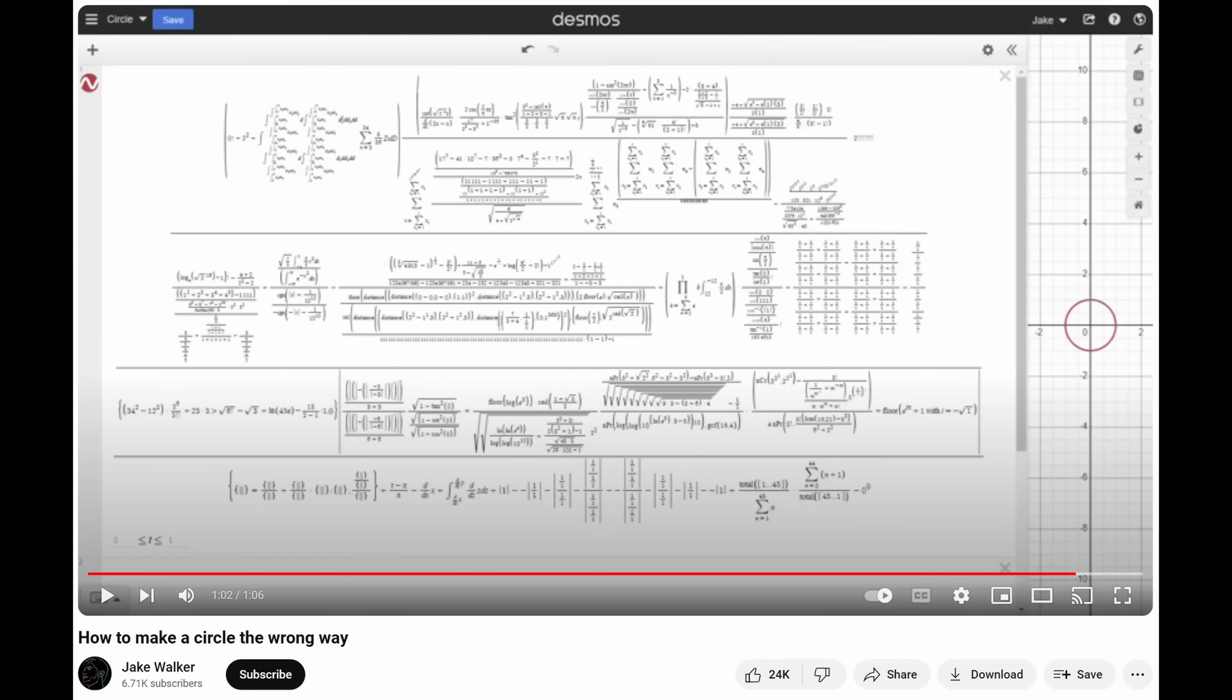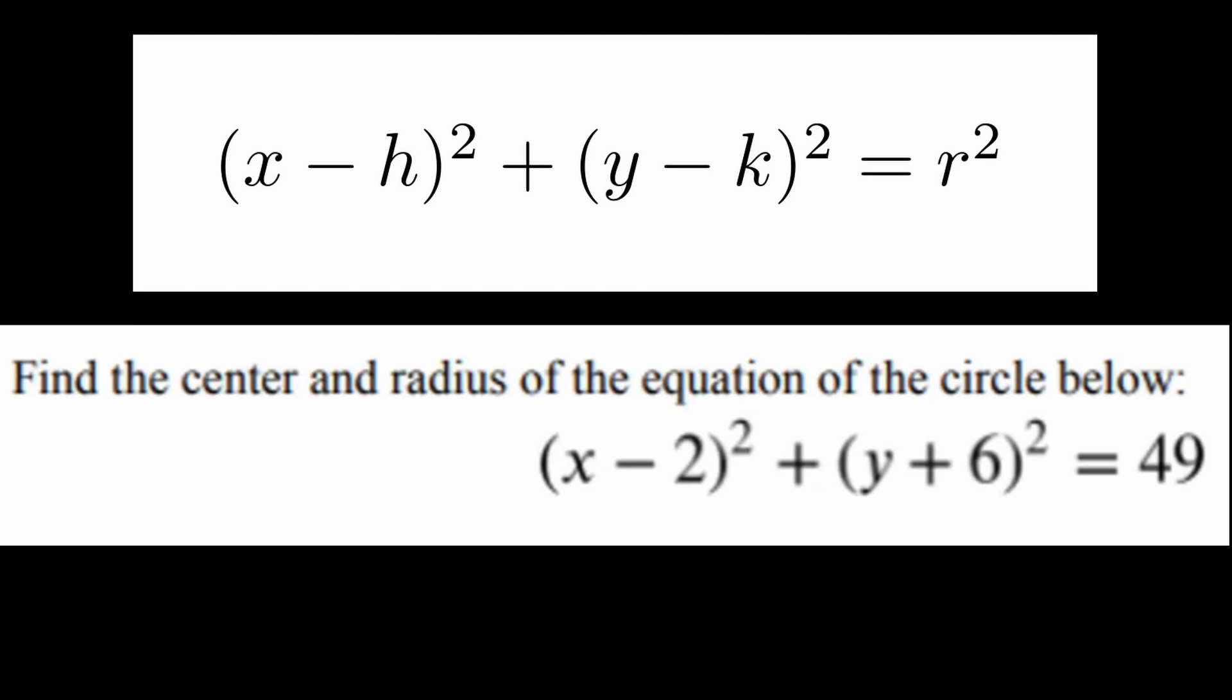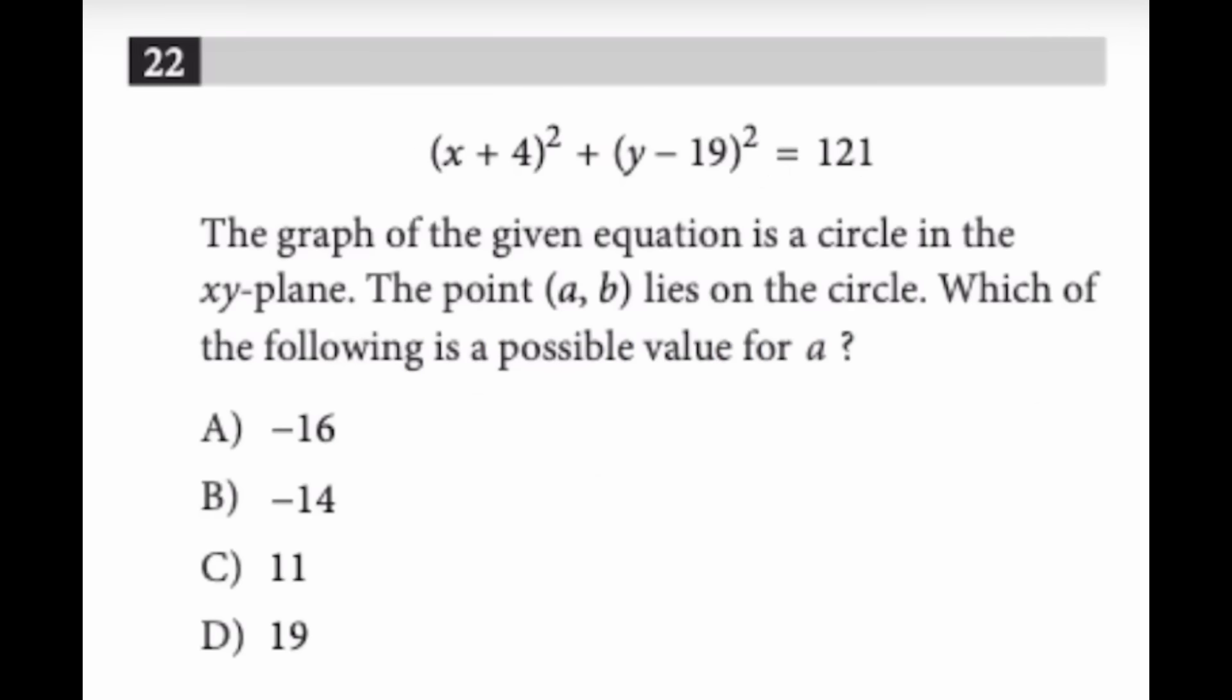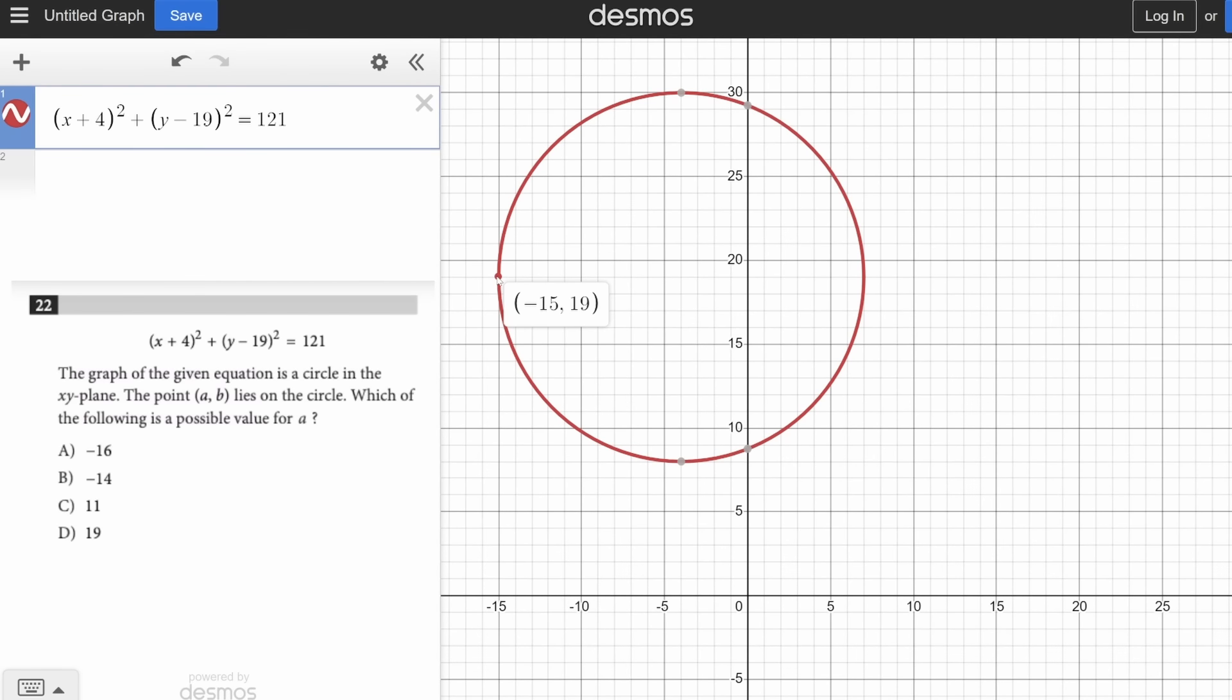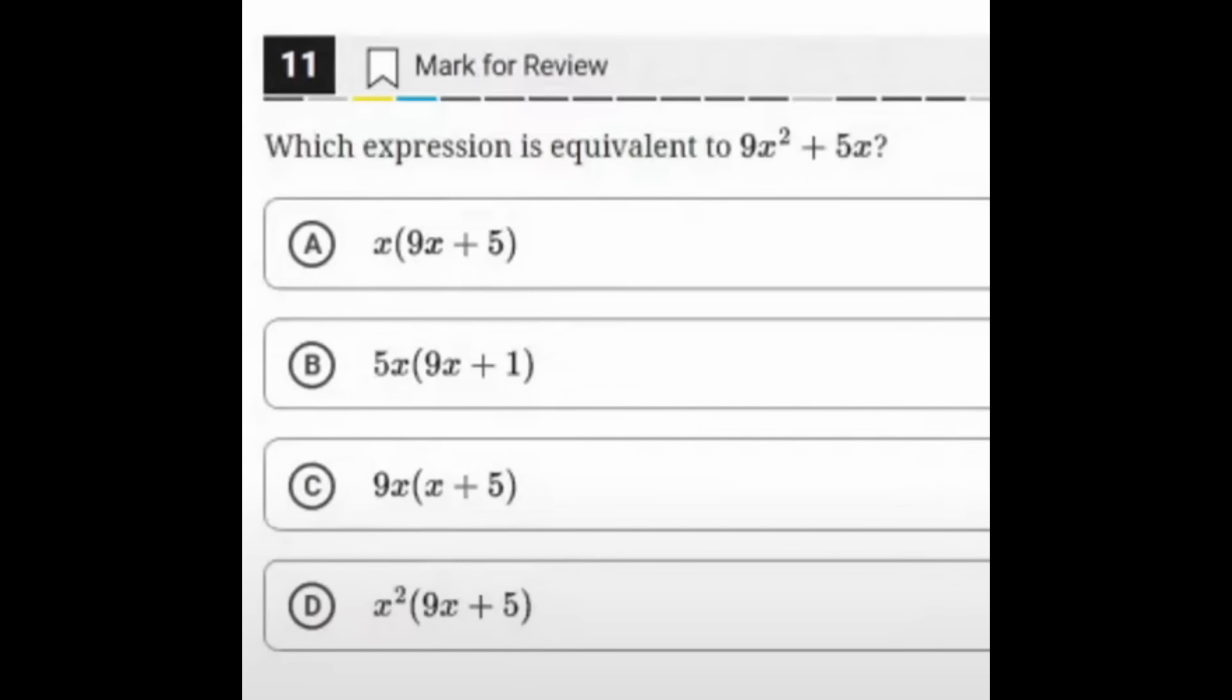I've seen plenty of people use Desmos to make circles, but most circle problems on the SAT are really just testing if you know the circle formula. Like this problem. If you know the circle formula, you can clearly identify your center and radius in less than 5 seconds. So learning your circle formula should be the priority. However, there are problems like this one below where you're told AB lies on the circle and asked which of the following is a possible value for A. This is basically asking you which x value is on the circle, and if you graph the circle on Desmos, you can clearly see that the circle goes from negative 15 to 7, which means negative 14 is the only possible x value. So some circle problems are better with Desmos, some are worse.